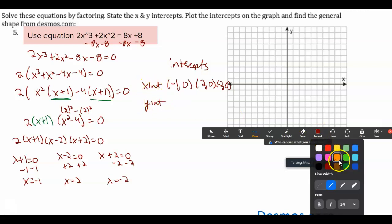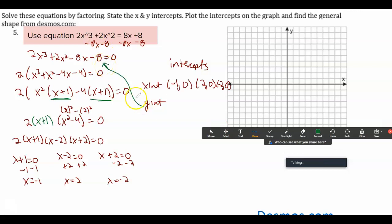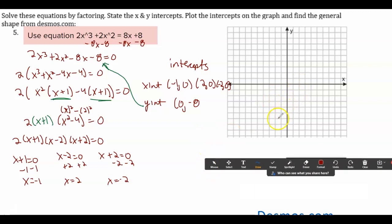So my intercepts, and then my y-intercept, remember it's whatever is at the end. So my constant there is my negative 8. So it's zero negative 8. Now I'm going to go ahead and plot these. Zero negative 8. One, two, three, four, five, six, seven. Negative 1, negative 2, positive 2. Then I need to consider sled. It's positive and odd. So it's going to be down and then up. So I know it's going to end going down, or start going down and going up. And then you just kind of connect the dots between. You can also sketch this on Desmos if you need to.